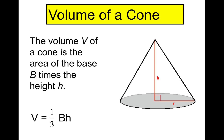Now for cones. The volume of a cone is very similar to the volume of a pyramid because a cone is like a round pyramid. The volume of a cone is also one-third times the area of the base times the height. However, we use the circle formula for the area of the base since the base is circular. So again, V = (1/3) × B × H.